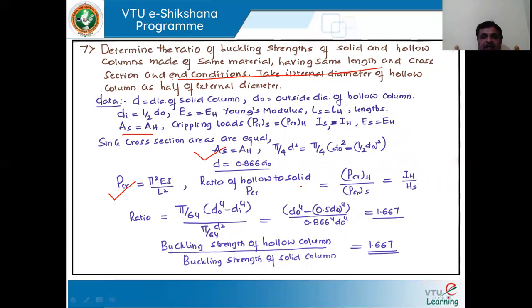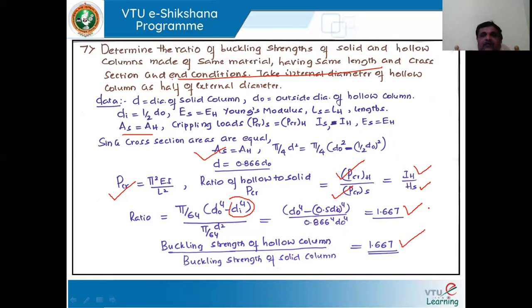Taking the crippling load equation pi squared EI by L squared, we find the ratio PCR hollow by PCR solid. Since pi squared, Young's modulus, and L cancel out, only the moments of inertia remain: IH divided by IS. For hollow, I is pi by 64 (DO to the power 4 minus DI to the power 4), substituting DI as 0.5 DO. We get the ratio as 1.667. So the buckling strength of the hollow column is 1.667 times that of the solid column. This completes the problems on columns.